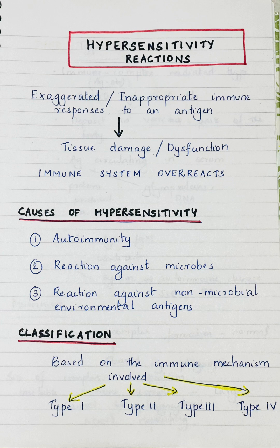So what is hypersensitivity reaction? Hypersensitivity reaction is an exaggerated or inappropriate immune response to an antigen that leads to tissue damage or dysfunction. So when a substance enters into our body — it could be pollen, food, or any medication — our immune system overreacts to this normally harmless substance. This is what is called a hypersensitivity reaction.